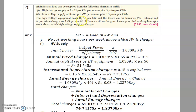Interest and depreciation charges on HV equipment are 15%. There are 40 working weeks in a year. We need to find the number of hours per week above which HV supply is cheaper. Let x be the load in kW at the industry, and y be the number of working hours per week above which HV supply is cheaper.